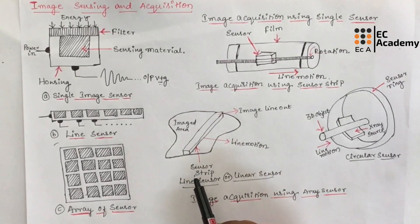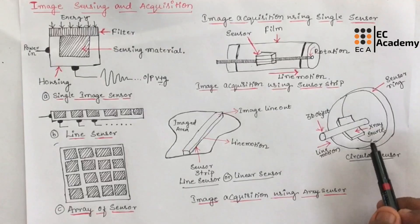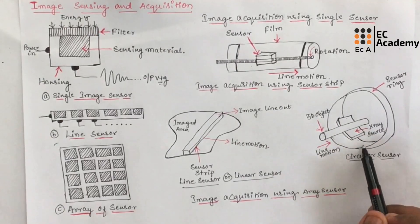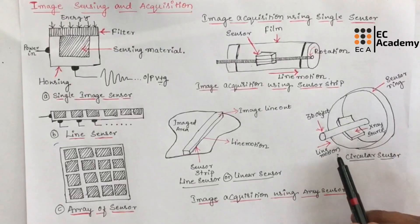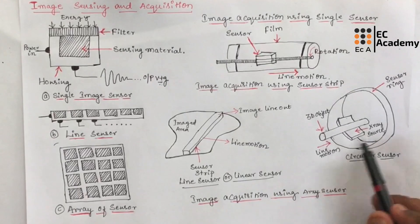These strips gives one line image at a time. And motion of this strip completes the other dimension of a 2D images. The sensor strips can also be mounted on a ring configuration and are used in medical or industrial imaging to obtain the cross sectional image of 3D object as you can see in this figure.